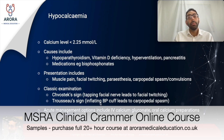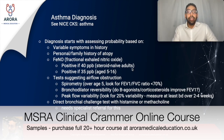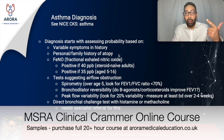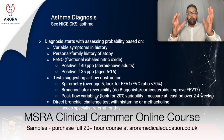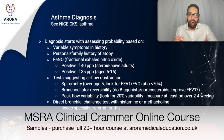Looking at asthma diagnosis, there are core NICE/CKS guidelines on how to diagnose asthma at the initial stage. There are five key things to bear in mind when assessing probability of an asthma diagnosis: number one, variable symptoms in history; number two, personal or family history of atopy; number three, a FeNO result; number four, a test suggesting airflow obstruction; and number five, direct bronchial challenge testing. You look at as many of these five as available and assess the overall probability.